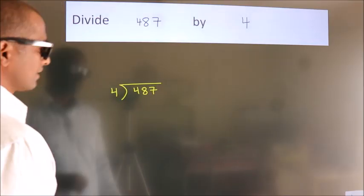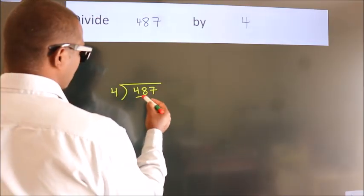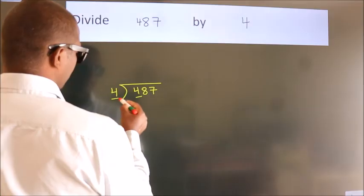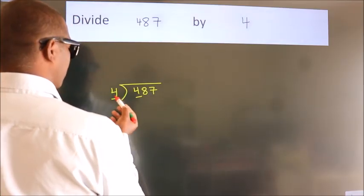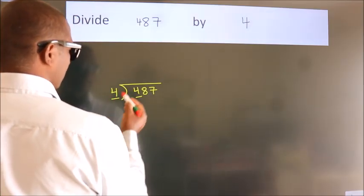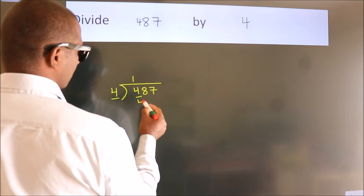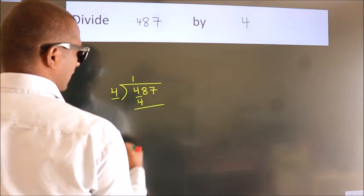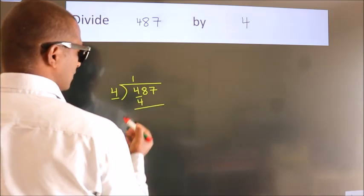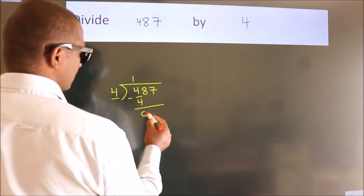Next, here we have 4, here 4. When do we get 4? In the 4 table — 4 once is 4. Now we subtract, we get 0.